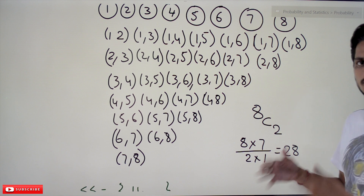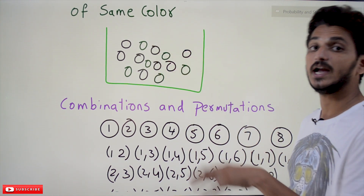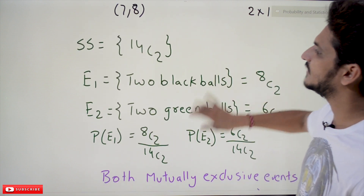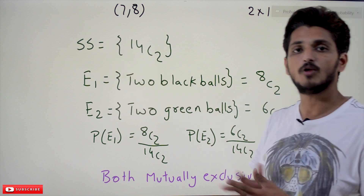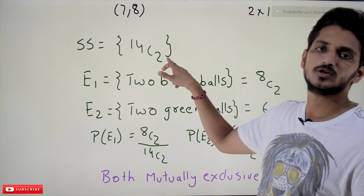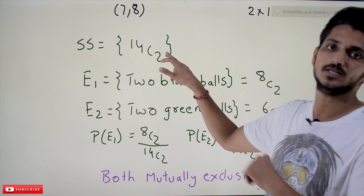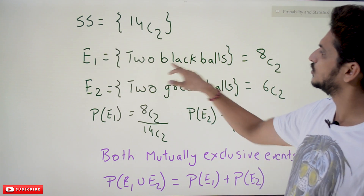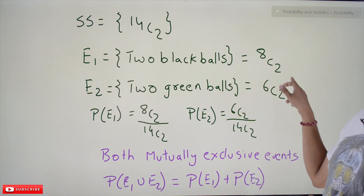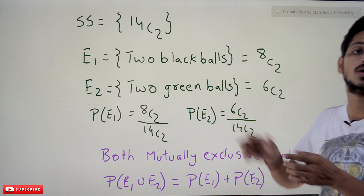In the bag we have eight black balls and six green balls. If you randomly select two balls, what is the probability that both are of the same color? First we identify the sample space: total balls are eight plus six equals 14. Out of 14 we have to select two, so the sample space is 14C2. Event E1 is picking two black balls — eight black balls give 8C2 ways. Event E2 is picking two green balls — six green balls give 6C2 ways. These two events are mutually exclusive.